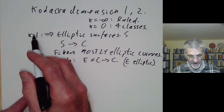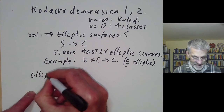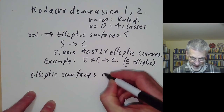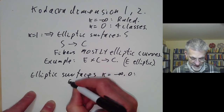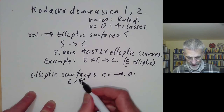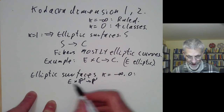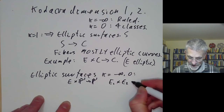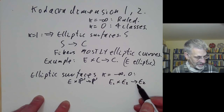Not all elliptic surfaces have Kodaira dimension 1 — we can have elliptic surfaces with Kodaira dimension minus infinity or 0. Some examples of these are E times P1 for E elliptic, which maps to P1, so this has Kodaira dimension minus infinity. Or we could take a product of two elliptic curves mapping to an elliptic curve, which would have Kodaira dimension 0.